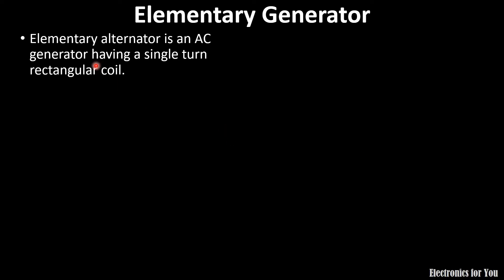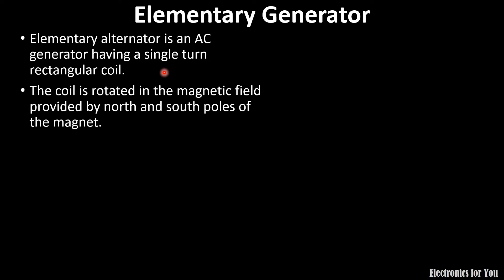An elementary alternator, or we can say elementary generator, is an AC generator having a single turn rectangular coil. It is a generator which has only a single turn in the coil. The coil is rotated in the magnetic field provided by the north and south poles of the magnet.